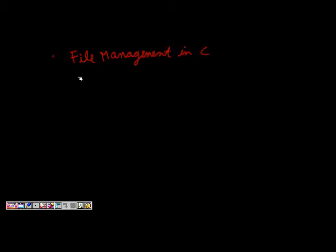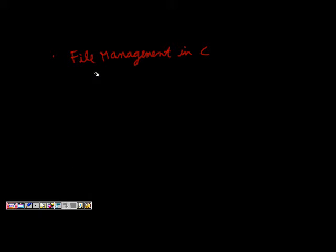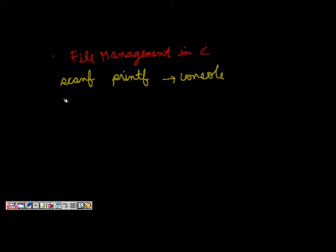We will start with file management in C. We can take data input and output from the user using scanf and output the data using printf. These are both for the console, and we know that in the console the output is not permanent — we cannot store anything there. That's why we need some permanent storage, and for that we have files.